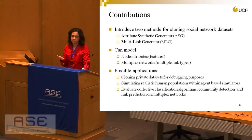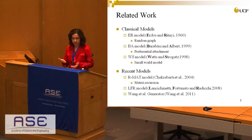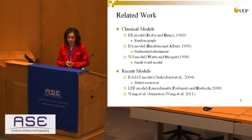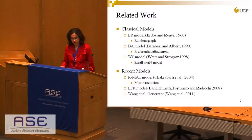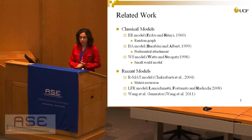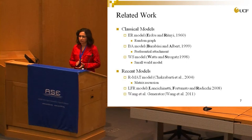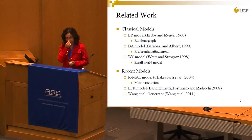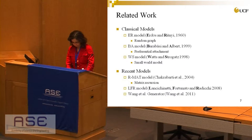Some related work includes classical models: the Erdős-Rényi model based on random graphs, the Barabási-Albert model that generates networks based on preferential attachment (nodes prefer to attach to higher-degree nodes), and the Watts model for small-world networks with small diameter and high clustering coefficient. Well-known recent models include R-MAT based on matrix recursion, LFR for community detection, and one ETL generator that our work is based on. None of these used the Multilink Generator or node attributes, and all focused on modeling network structure rather than cloning a specific dataset.